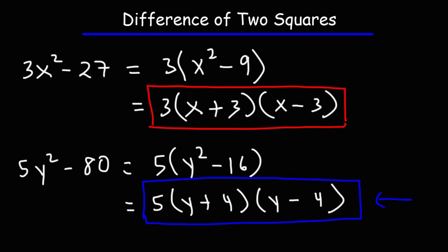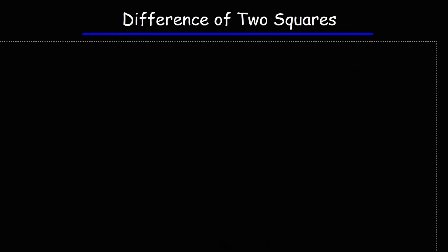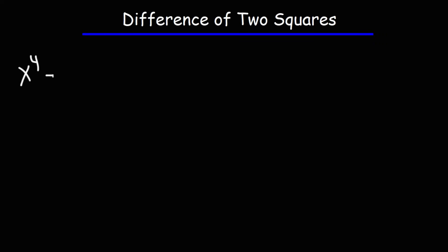So if you can't take the square root, focus on factoring out the GCF first, and then factor the difference of the two squares. Now go ahead and try these two problems: x to the 4th minus 81, and 16x to the 4th minus 81y to the 4th.